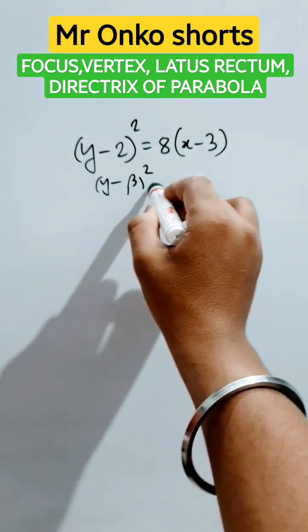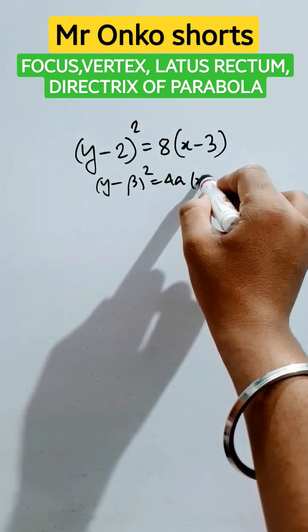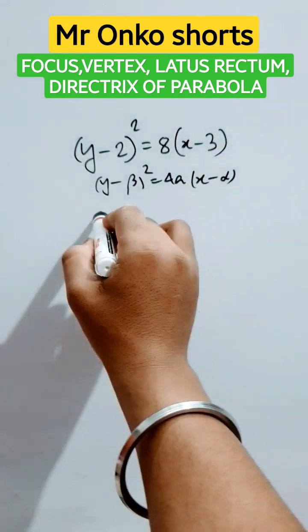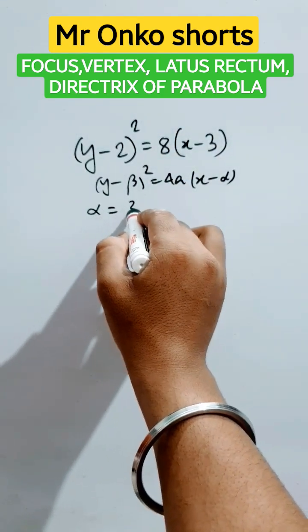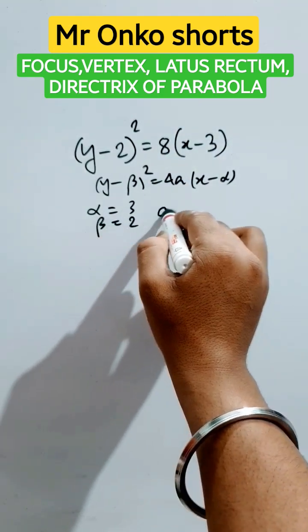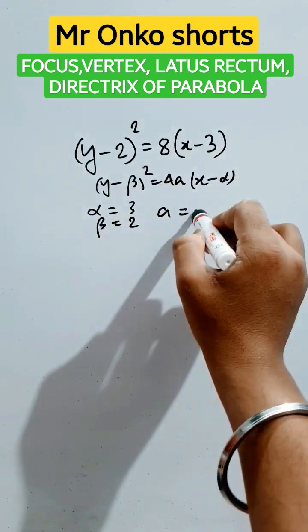First of all, we will compare this with the equation (y-β)² = 4a(x-α). So from here, α equals 3, β equals 2, and 4a equals 8, so a equals 2.